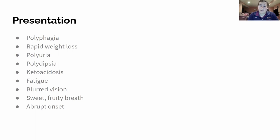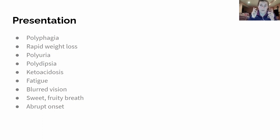Blurred vision — this is because the nerves to the eyes are developing sensory problems because the blood sugar is getting so high, so the optic nerve starts to become affected. This is also why, if you let diabetes go too long, you can develop vision loss.